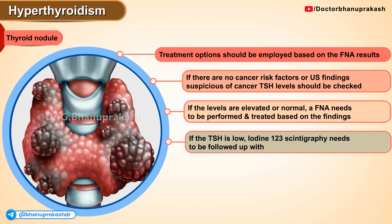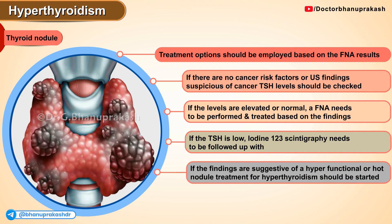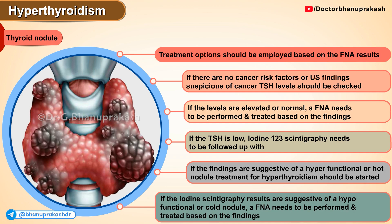On the other hand, if the TSH is low, iodine-123 scintigraphy needs to be performed. If the findings are suggestive of a hyperfunctional or hot nodule, treatment for hyperthyroidism should be employed. If the iodine-123 scintigraphy results are suggestive of a hypofunctional or cold nodule, an FNA needs to be performed and treatment is based on the findings of fine-needle aspiration.